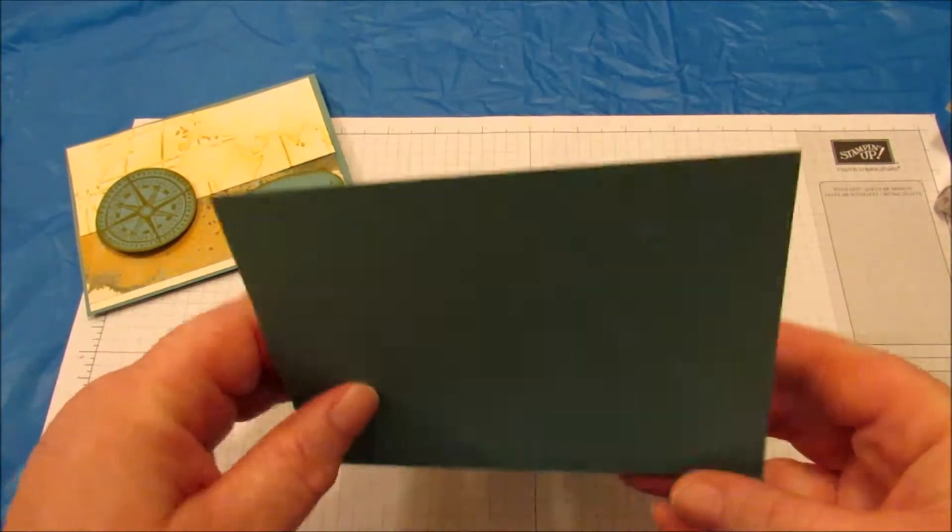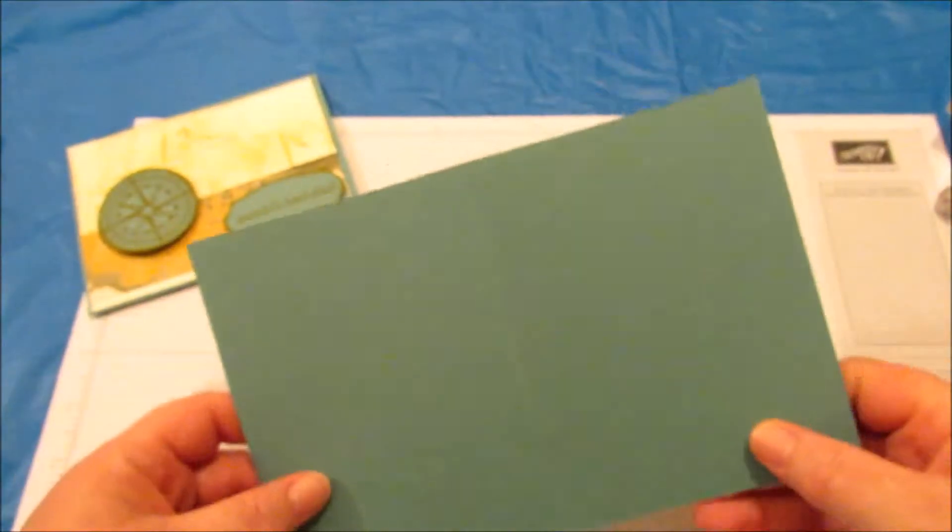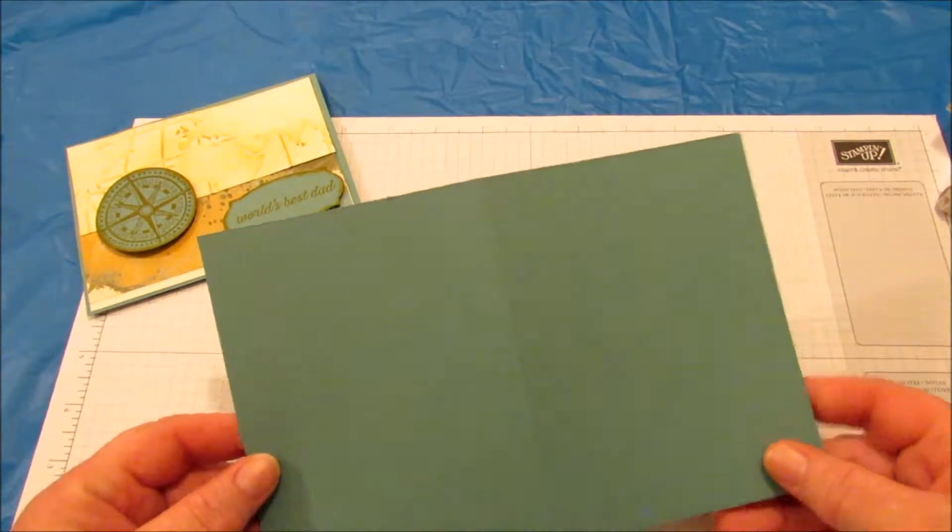So what I'm using is Lost Lagoon paper, eight and a half by five and a half, scored at four and a half.